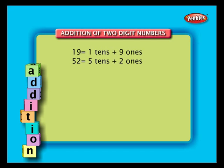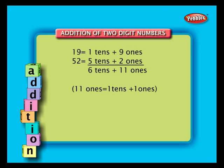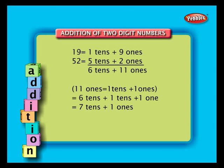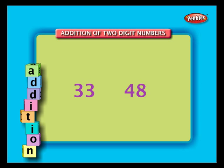Method 2: 19 is equal to one ten plus nine ones. 52 is equal to five tens plus two ones. Totally we have six tens and eleven ones. 11 ones can further be split into one ten and one one. Add this one ten to six tens — we get seven tens and the remaining one is one. So we get seven tens and one one, which is equal to 71.